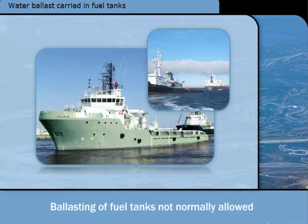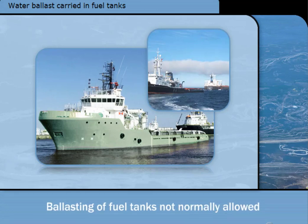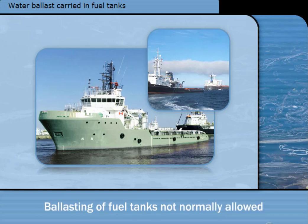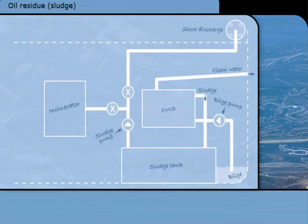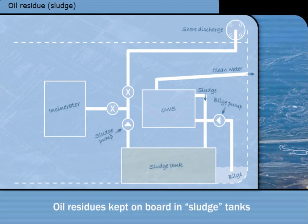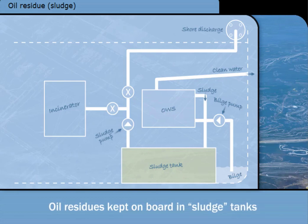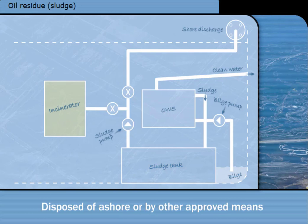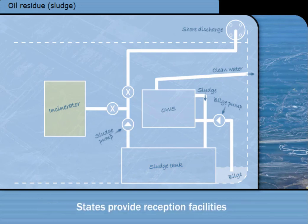Ships are not usually allowed to carry ballast in fuel tanks, but on some types of ships, such as long distance tugs, it is unavoidable. Special conditions are applied before discharge of oily ballast is allowed. Oily water separators do not get rid of the oil — they only separate it from the water before the water is discharged overboard. The oil residues separated off must be collected and retained on board in a sludge tank until they can be disposed of ashore or by other approved means, such as burning in an incinerator or the ship's boiler.